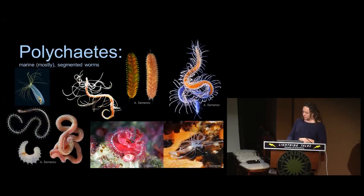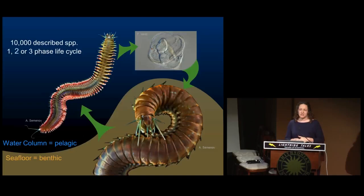The polychaetes are marine segmented worms. They come in all shapes and sizes, as you can see. Many of them are beautiful. Of the about 10,000 species that are described currently, they exhibit various different types of life phases.